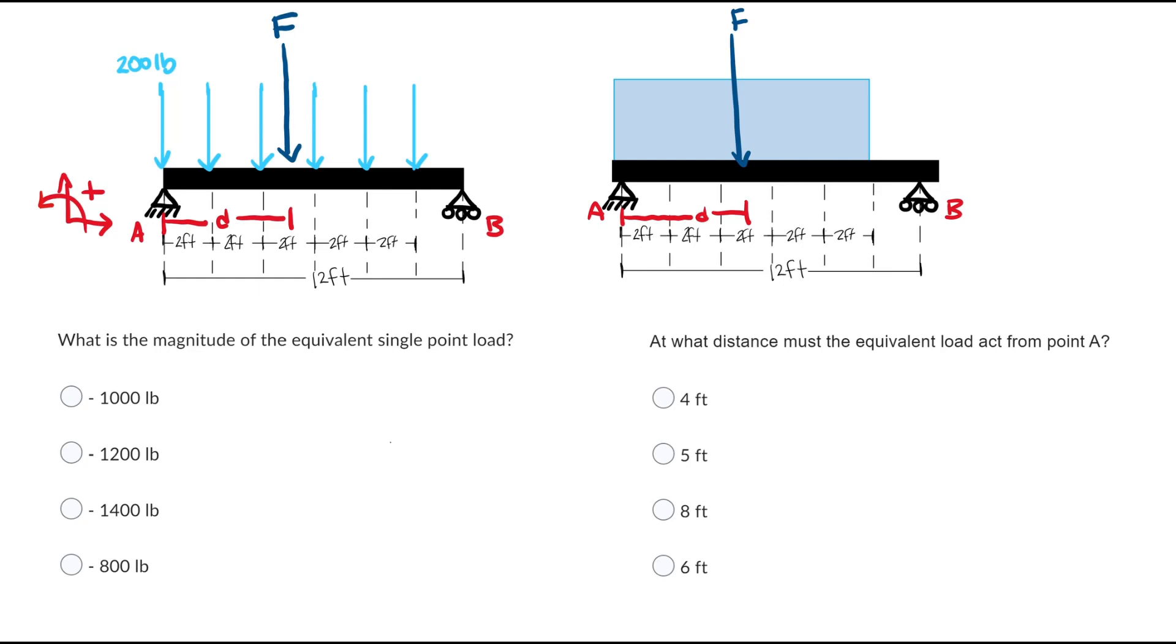First starting with finding the magnitude of F in this case. F will be equal to the absolute value of 200 pounds, but it's important to note it will be negative since the force is acting downwards and we have six separate individual forces pushing down.